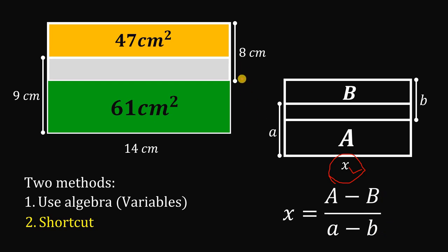Now, using the given in our diagram, this A represents 61, this B represents 47, this small a represents 9, and this small b represents 8. So, we can replace all of this in the equation. x equals 61 minus 47 all over 9 minus 8. Now, let's simplify. 61 minus 47, this will give us 14. And 9 minus 8, this will give us 1. And 14 over 1 simply equals 14.